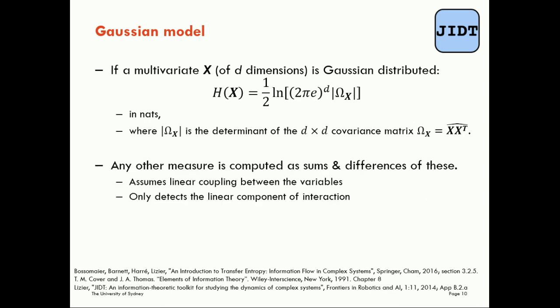We can then generalize this to take any other measure as a sum and difference of these multivariate entropies. For example the mutual information will be computed as a sum of the marginal entropies minus the joint entropy.